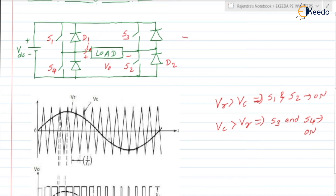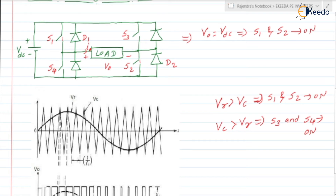When S1 and S2 are turned on, current will flow from VDC through S1, through the load, through S2, and back to VDC. So the output voltage will be the same as VDC — that is, V0 = VDC. This is when S1 and S2 are turned on, which is when the magnitude of VR is greater than VC.